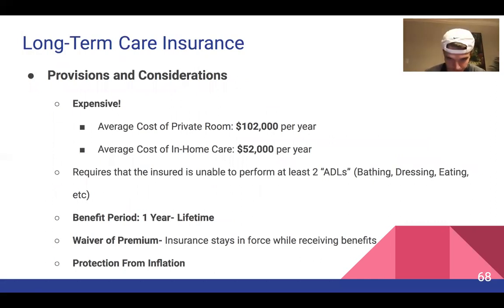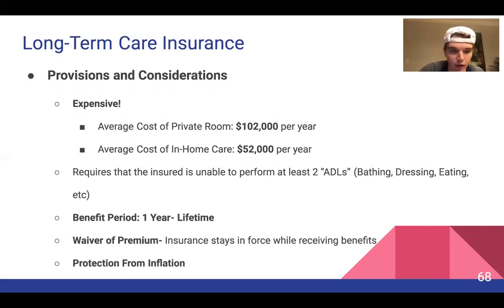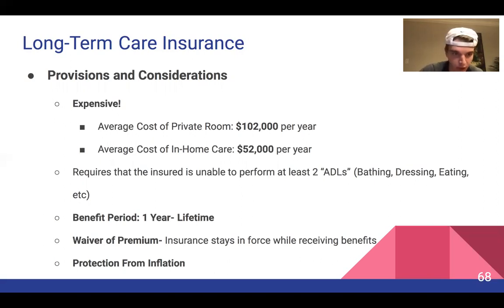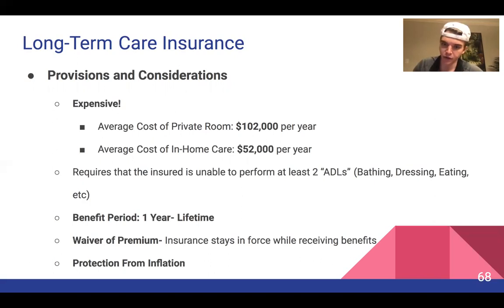Important things to consider: long-term care is very expensive — the average cost of a private room is over $100,000 a year, and if you choose the in-home care option it'll run you over $50,000 a year. Long-term insurance requires the insurer to be unable to perform at least two ADLs (Activities of Daily Living), which include things like bathing, dressing, and eating. The benefit period can last from one year to a lifetime, with either a defined benefit period or lifetime coverage. The waiver of premium is a big deal — insurance stays in force while receiving benefits. With long-term care insurance you pay known premiums in advance, allowing you to budget for your payment. The policy pays up to its coverage limits for the long-term care services you need when you need them. Most policies will waive premiums during the time you're receiving benefits, and some will not.